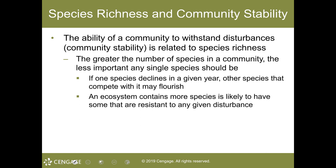Species richness is affected by geologic history. Many scientists think that the tropical rainforests are old, stable communities that have undergone relatively few widespread disturbances through history. During this time, a myriad of species evolved in the tropical rainforests. In contrast, glaciers have repeatedly altered temperate and arctic regions throughout Earth's history, and an area recently vacated by glaciers will have low species richness because few species have had the chance to become established. The idea that older, more stable habitats have greater species richness than habitats subject to frequent widespread disturbances is known as the time hypothesis.